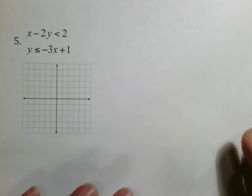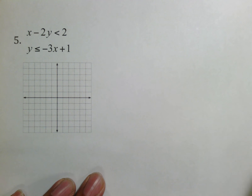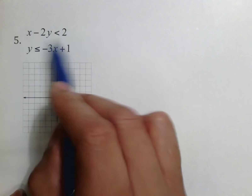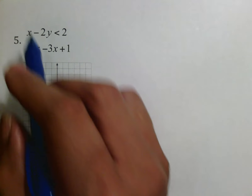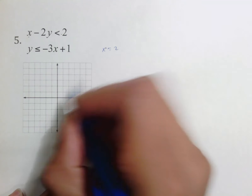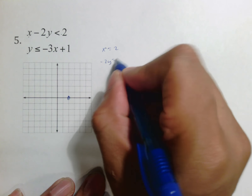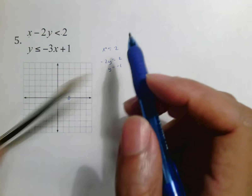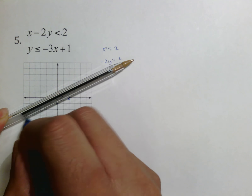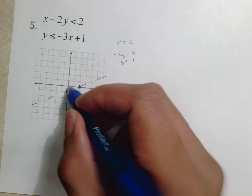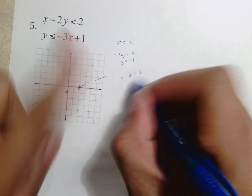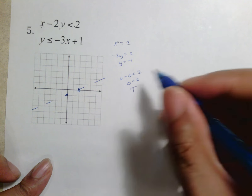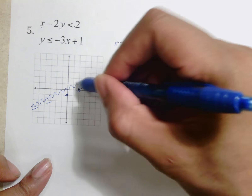Number five: x − 2y < 2. Take a moment and find your X, your Y, and determine if the (0, 0) test is true or false. The first thing I write is x = 2, which places my dot here. Then −2y = 2, so Y = −1 — go down one. This tells me to draw a dashed line. Testing (0, 0): 0 − 0 < 2, which is 0 < 2 — that makes sense, it's true, so we shade towards (0, 0).